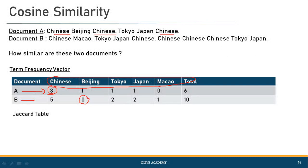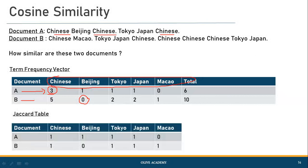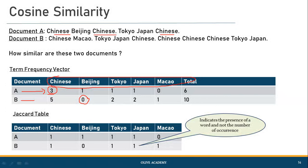We also need to construct a Jaccard table. The difference between the Jaccard table and the frequency table is that the Jaccard table indicates the presence of a word, not the number of occurrences. For example, the word 'Japan' occurred two times in document B and is shown as two in the frequency table, but in the Jaccard table it is marked as one, because we only care whether the word appears at all. Wherever a word appears at least once we mark it as one, and wherever it does not appear we mark it as zero.